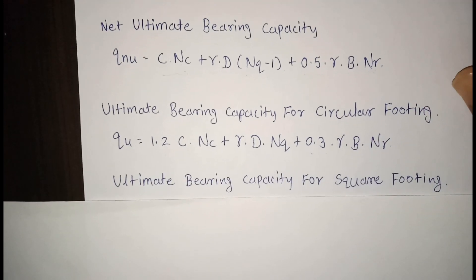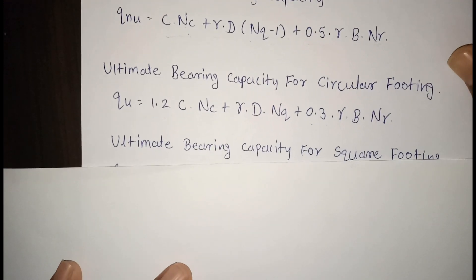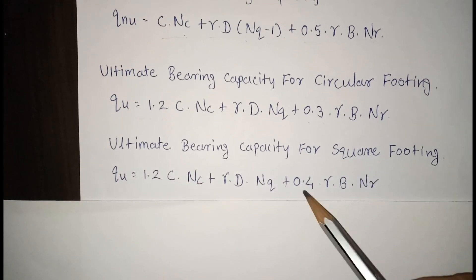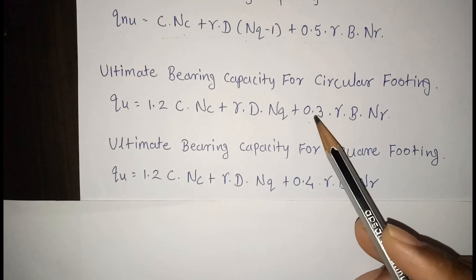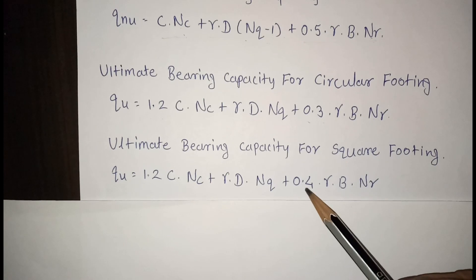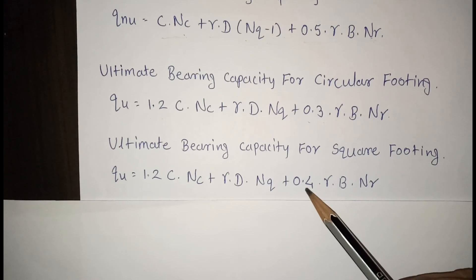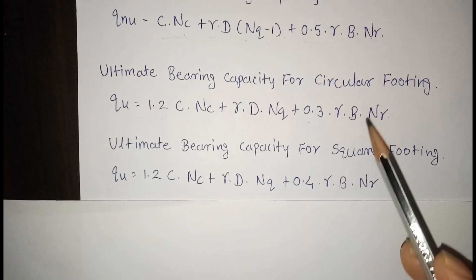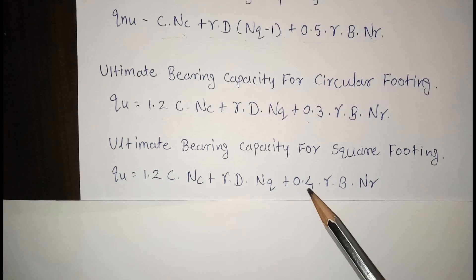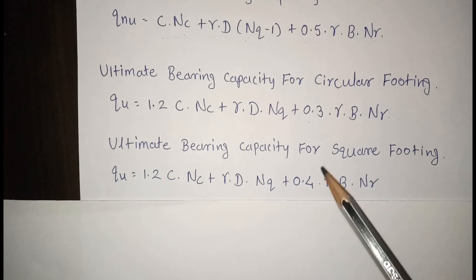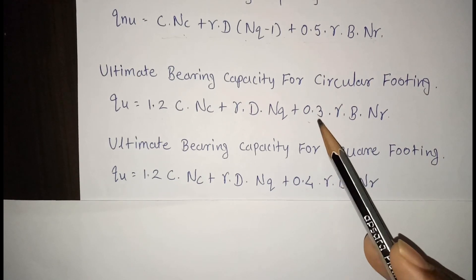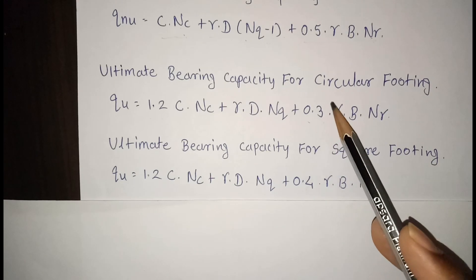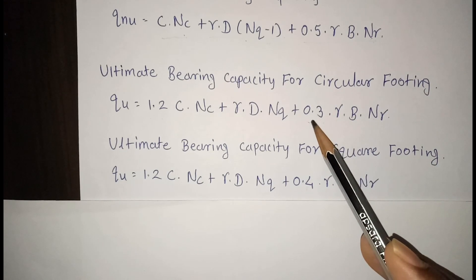For square footing, ultimate bearing capacity uses the same form, but instead of 0.3, a coefficient of 0.4 is used in the third term. So in square footing 0.4 is used, whereas in circular footing 0.3 is used.